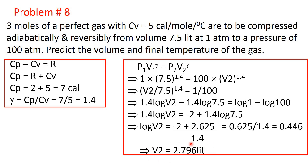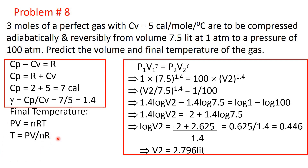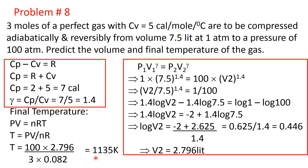Now finding the final temperature using the ideal gas law PV equals nRT: T equals PV divided by nR. Substituting final pressure 100 atmospheres, final volume 2.796 liters, n equals 3 moles, and R equals 0.082 liter·atmosphere per mole·Kelvin, the final temperature comes out as 1135 Kelvin. This is the final temperature and this is the final volume. With this we have come to the end. Thank you.